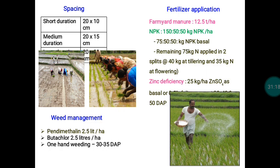After planting, all major nutrients must be applied. Before the last puddling, farm yard manure (FYM) is applied at 12.5 tons per hectare. The recommended dose of NPK for rice is 150:50:50 kg per hectare. As basal, 75 kg nitrogen, 50 kg phosphorus, and 50 kg potassium are applied — the entire phosphorus and potassium dose is applied as basal before the last puddling. The remaining 75 kg nitrogen is applied in two split doses: 40 kg at tillering and 30 kg at panicle initiation (boot leaf stage).